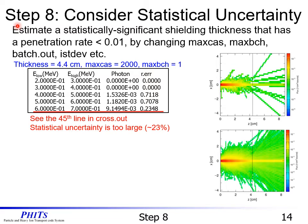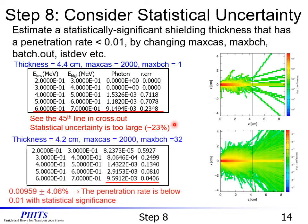Let's go on to Step 8: consider statistical uncertainty. We should estimate a statistically significant shielding thickness such that the penetration rate is less than 0.01, by changing max_cas, max_batch, batch.out, istdiv, etc. We show a sample case of thickness equal to 4.4 centimeters, max_cas equal to 2000, and max_batch equal to 1. We find that the statistical uncertainty is too large at 23%. In the case of thickness 4.2 centimeters, max_cas equal to 2000, and max_batch equal to 32, we can confirm that the penetration rate is below 0.01 with statistical significance.